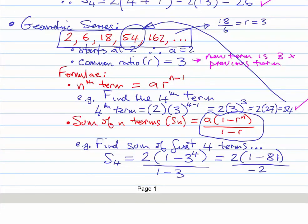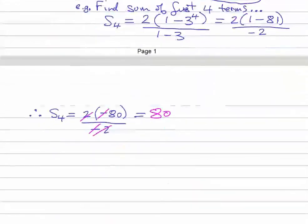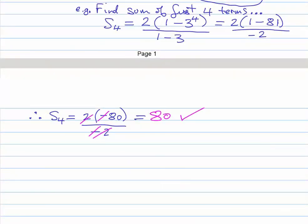Let's verify: the sum of the first four terms — 2 plus 6 gives 8, plus 18 gives 26, plus 54 gives 80. We're happy with that. See you in the next video.